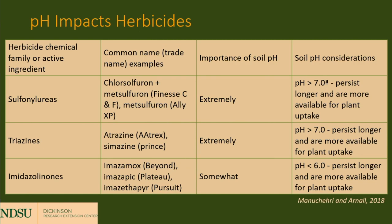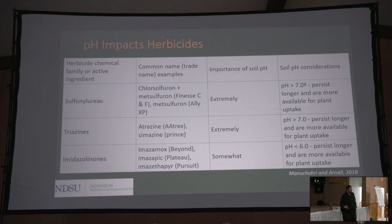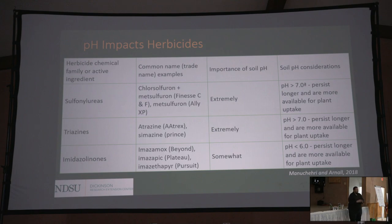pH also impacts herbicides. If your pHs are too acidic, imidazolines will persist a lot longer in the soil and be more available, so you might see more crop damage than you'd be accustomed to. If pHs are too high, the same thing can happen. pH influences almost everything we do when we farm.